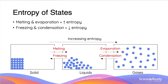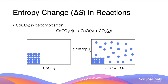From this understanding, if we melt a solid into a liquid, we would say that we are increasing entropy, and if we are evaporating it, we are increasing the entropy still. Conversely, if we are condensing the gas into a liquid, we are going to be decreasing the entropy, and if we freeze the liquid into a solid, we will decrease the entropy more.